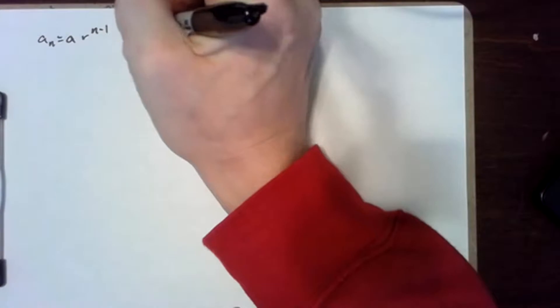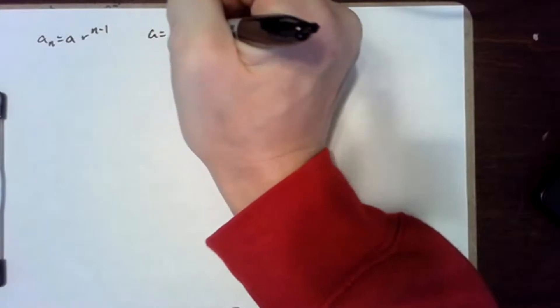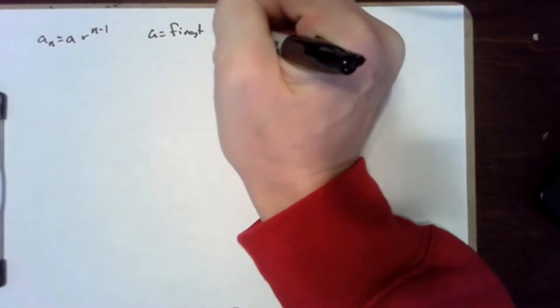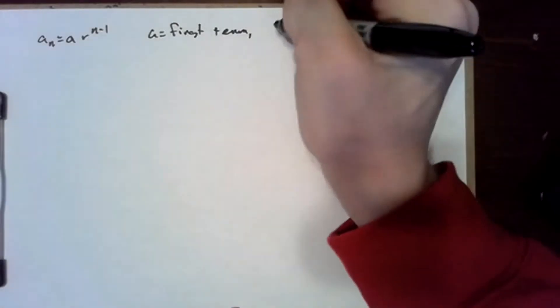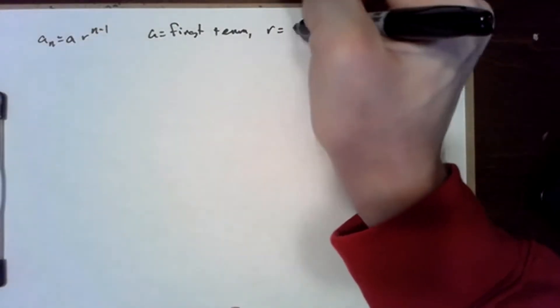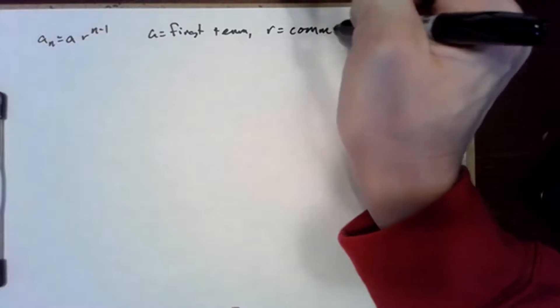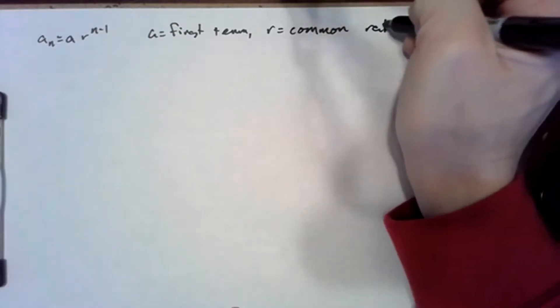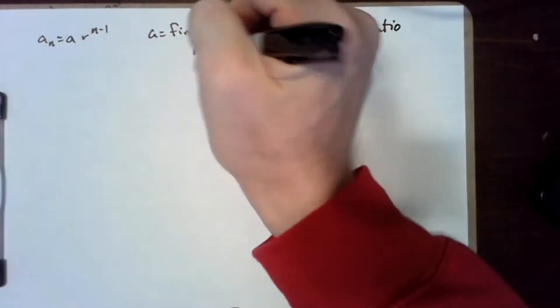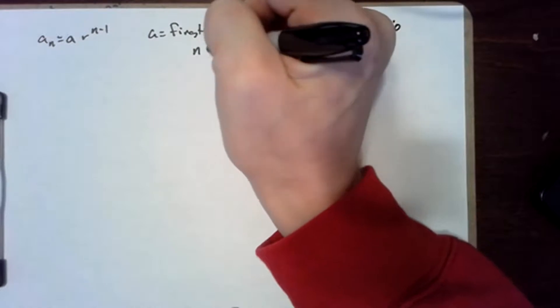For this problem, we're going to use this formula: a sub n equals a times r to the n minus one, where a is the first term, r is the common ratio, and n is the number of the term we're looking for.